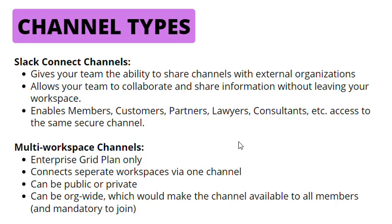Moving on to multi-workspace channels — these are only available on the Enterprise Grid plan. Multi-workspace channels connect separate workspaces via one channel. For example, if I have a workspace for Cloud Qualified and another for Slack Training, I can create one channel called Slack Videos and share it with both workspaces, so users from both can collaborate without having to be members of each other's workspaces. Multi-workspace channels can be public or private, and they can also be made org-wide, which makes the channel available to all members within your organization regardless of their workspace, and joining would be mandatory.